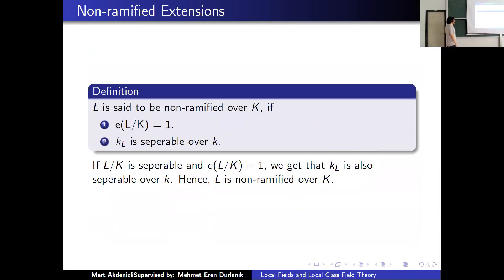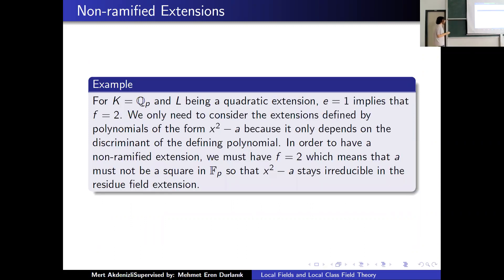We will look at unramified extensions first. L is said to be unramified over K if the ramification index is 1 and the corresponding residue field extension is separable over K. If L over K is separable, this condition holds too, so we can also say L over K is separable. As an example, looking at Q_p and its quadratic extension, for a non-ramified extension we need e equals 1 and f equals 2. So the polynomial must be irreducible in the residue field, meaning A must be a non-square in F_p.